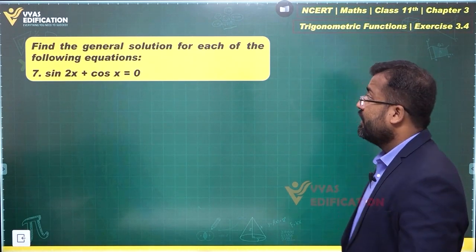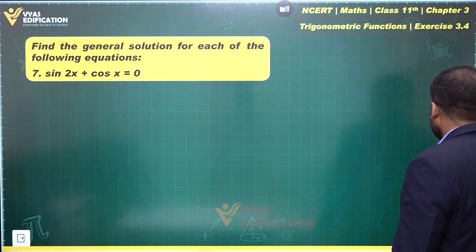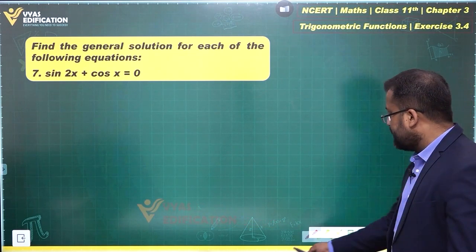Let's try and solve this question. What we have over here is sin 2x plus cos x equals 0.